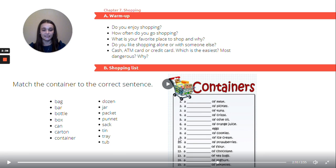Nine. A of ice cream. And that would be a tub of ice cream. Ten. A of strawberries. That would be a punnet of strawberries. Eleven. A of flour. That would be a bag of flour.